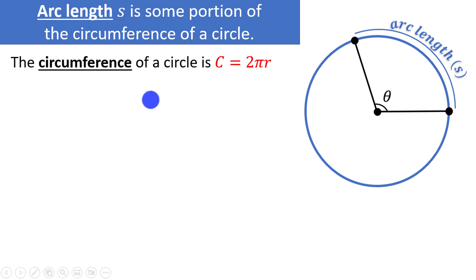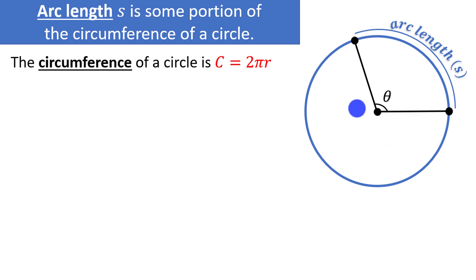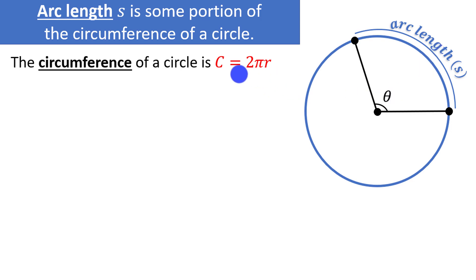The entire circumference of the circle is 2πr. We're going to use this idea to derive the formula for arc length, which is some portion of the circumference. We can think of the angle theta as describing some portion of the circle. For example, if theta equals π, we'd be halfway around the circle, and our arc length would be half the circumference. If theta was π/2, the arc length would be a quarter of the circumference.